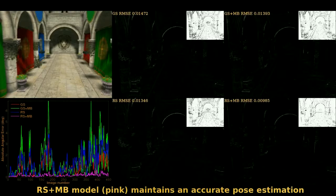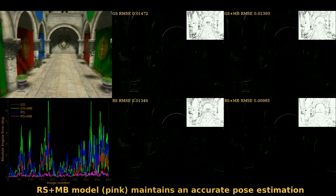From the error plot, it can be seen that the proposed dual model, shown in pink, remains consistently low, whilst the other approaches are very noisy.